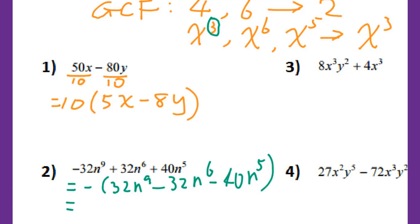Then the common factor I could see for 32, 32, 40 is 8. The lowest exponents for n is 5, so I take 8n to the fifth power outside. Then I do divide. 32 divided by 8 is 4. Then n to the ninth divided by n to the fifth, we subtract the exponents. I got n to the fourth power minus 4n to the first power, then minus 5.